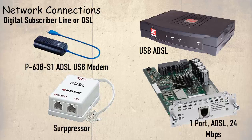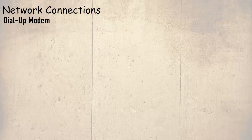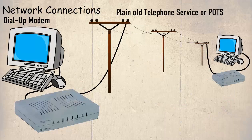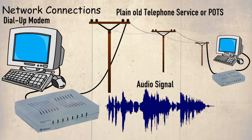Before broadband technologies became affordable enough to use within the home, the dial-up connection was the standard method of remote connectivity and internet access. Modems were installed internally or externally to the host, and this was then connected to the plain old telephone service, also known as POTS. The modem takes the digital signal produced by the host, which is just a series of zeros and ones, and converts them into an analogue signal that can be transmitted over the POTS. This process is called modulation. The analogue signal is essentially a sound signal, and anyone who ever used a dial-up connection will no doubt remember the loud screeching sound made when the connection was established.